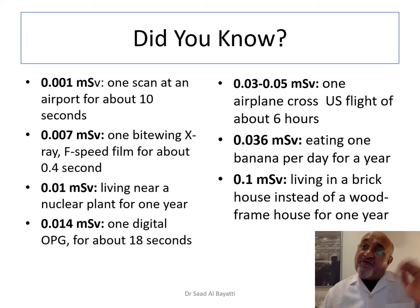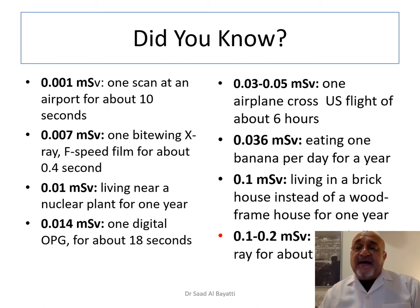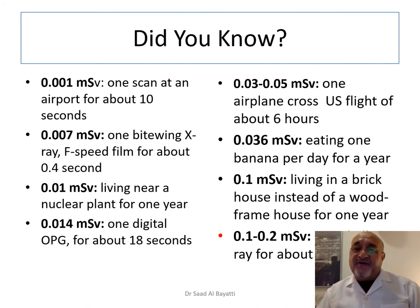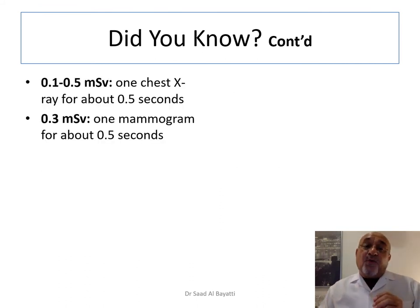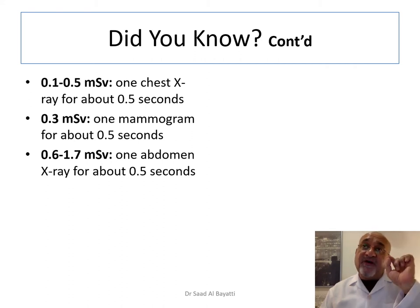Living in a brick or concrete house rather than a wooden house for one year results in a dose of 0.1 millisieverts. A lateral skull X-ray gives a dose of 0.1 to 0.2 millisieverts. One chest X-ray, with about 0.5 seconds of exposure, results in 0.1 to 0.5 millisieverts. If a lady does a mammogram for about 0.5 seconds, she will receive 0.3 millisieverts, which is a higher dose.